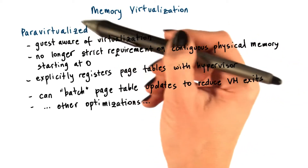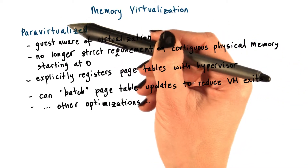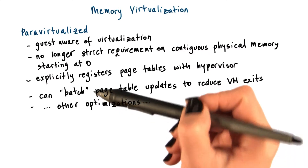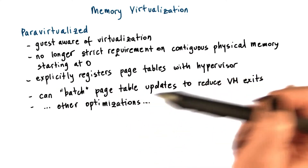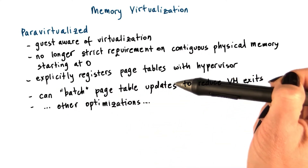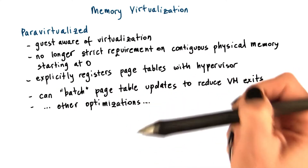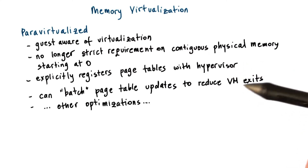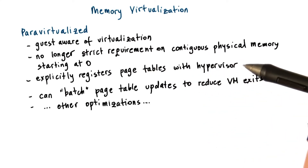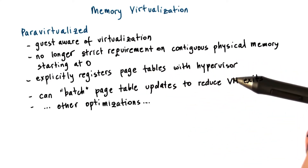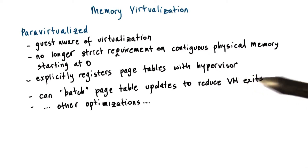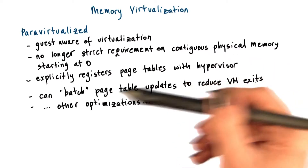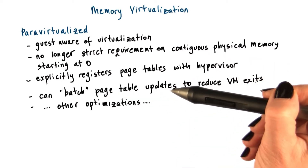Because the guest is para-virtualized, we can modify the guest and do tricks like batching a number of page table updates and then issue a single hypercall to tell the hypervisor to install all of these mappings. This can amortize the cost of the exit across multiple operations.